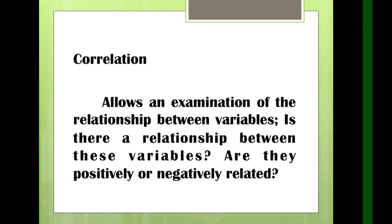Now let's go back to correlation. T-test and ANOVA are used to compare groups — meaning we are looking for significant difference. But correlation is different: it allows an examination of the relationship between variables. In ANOVA and t-test, the variables should be the same type. But in correlation, we can use two different variables — for example, a student's score and their height — to find if there is a relationship between them. The questions asked are: is there a significant relationship? Are they positively or negatively related?